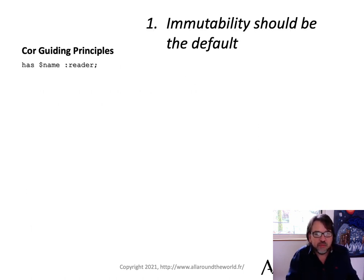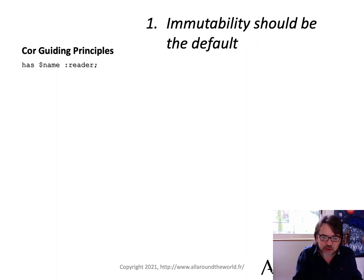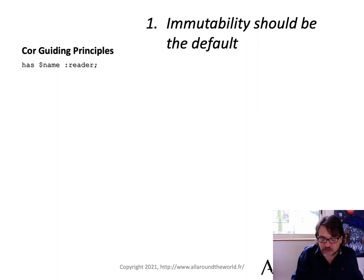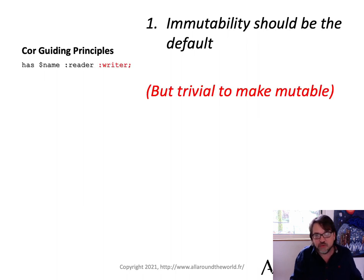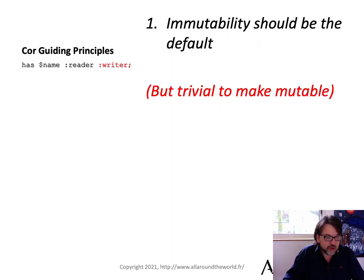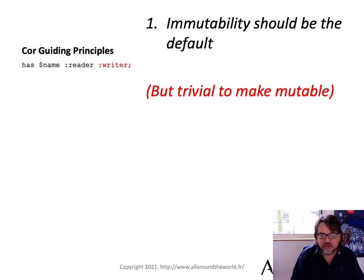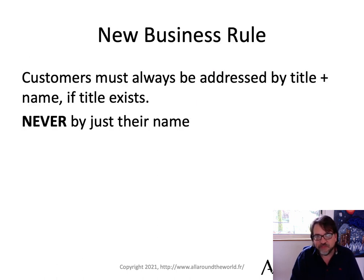So Cor's guiding principles: immutability needs to be the default. It doesn't have to be — it's trivial to make it mutable if you want to. If you're writing an ORM, you do need to be able to set that data, so you can do that, but by default: immutable.